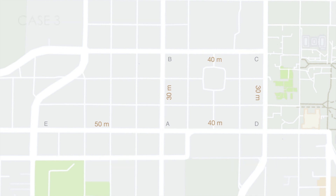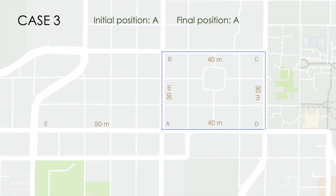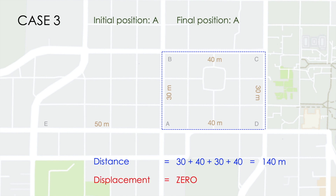Now let us look at another example. In this example, our initial position is A and our final position is also A. And therefore, the distance travelled would be from A to B to C to D and then back to A, and the distance would be equal to 140 metres. However, since the body was not at all displaced from its initial position, the displacement is equal to 0.